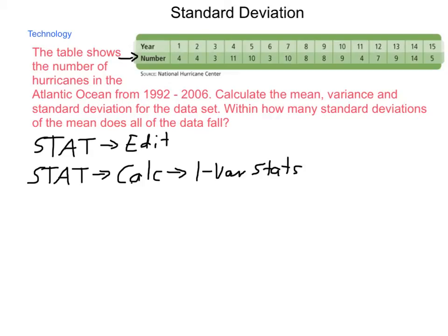When you run your one variable stats on the list that you just created, it will give you a large number of items. Somewhere in that list, normally towards the top, you have an x bar.